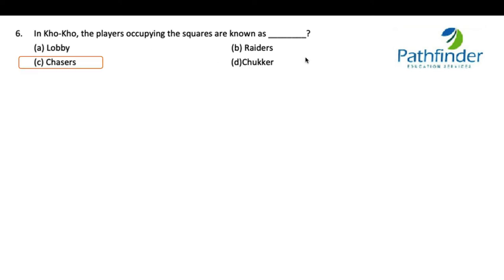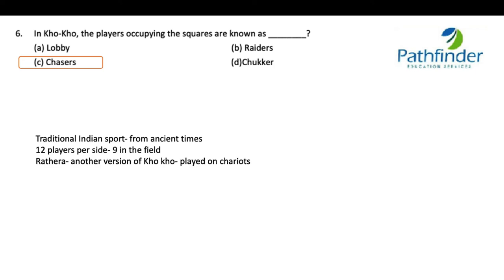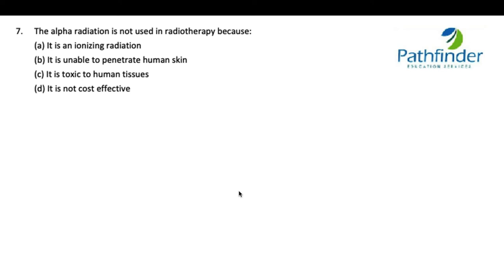Next question: in Kho-Kho, the players occupying the squares are known as chasers. Kho-Kho is a traditional Indian sport from ancient times. There are 12 players per side — nine in the field and three extras. Rathera is another version of Kho-Kho played on chariots. Some popular championships include the Nehru Gold Cup and the Federation Cup.